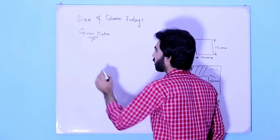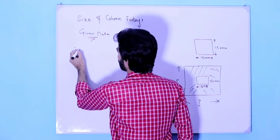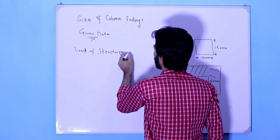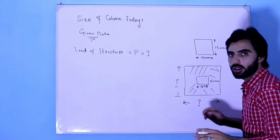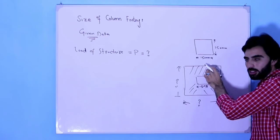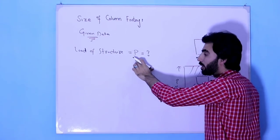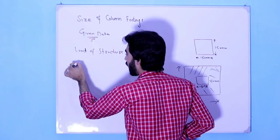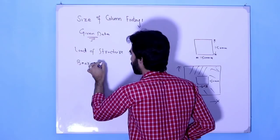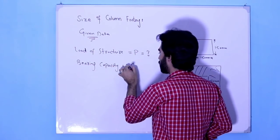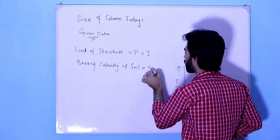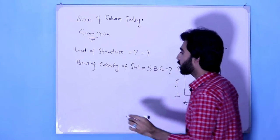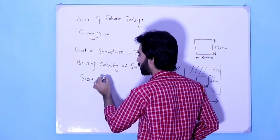To find the size of the footing, we need three important pieces of data. First, we require the load of the structure, which is called P. Second, we need the soil bearing capacity, abbreviated as SBC. Third, we need the size of the RCC column.